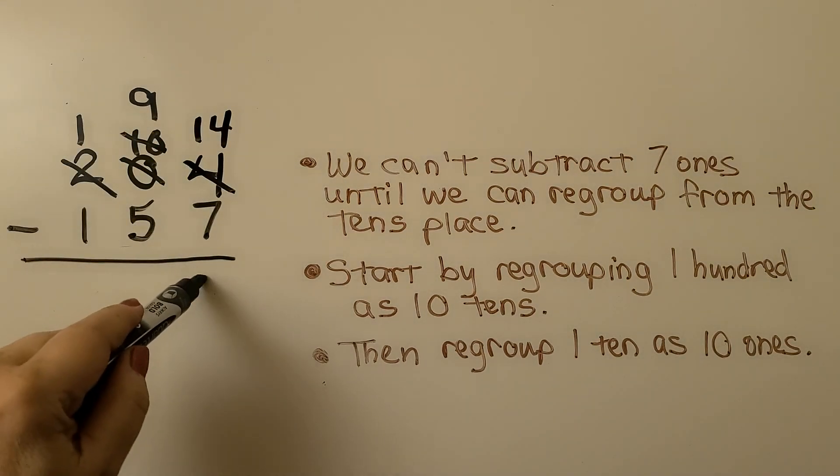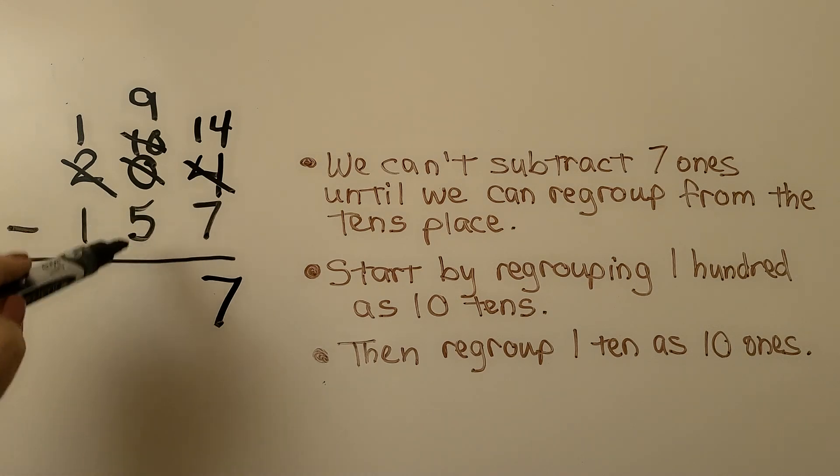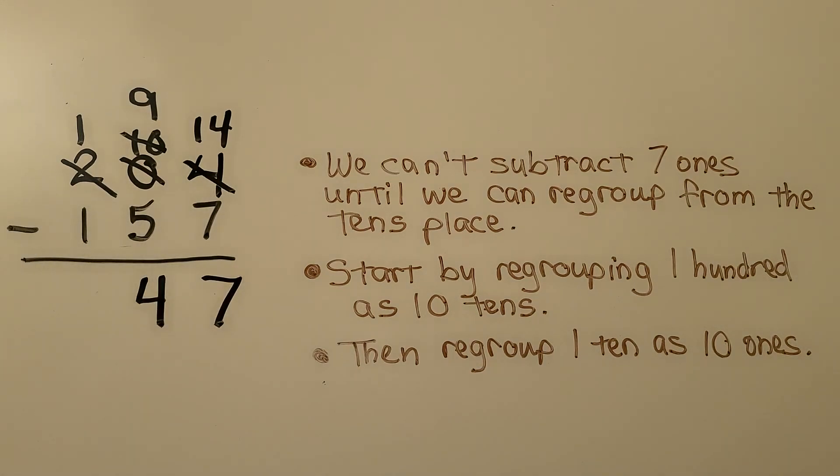Fourteen minus seven is equal to seven. Now we're way up here because we crossed these out. We have nine tens minus five tens is four tens. One hundred minus one hundred is zero. So we leave that blank. Our difference is forty-seven.